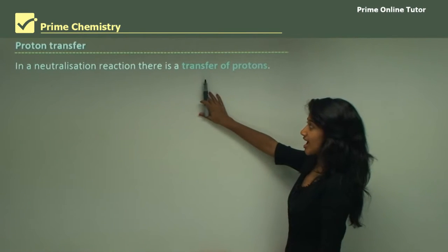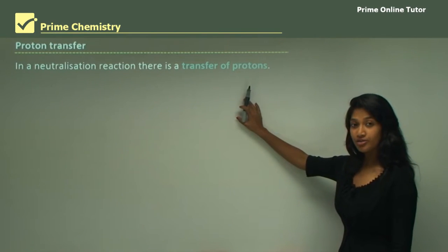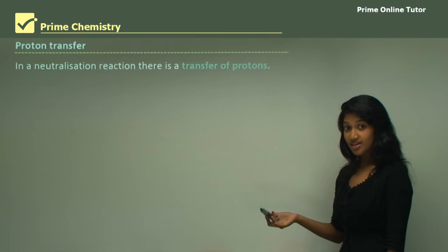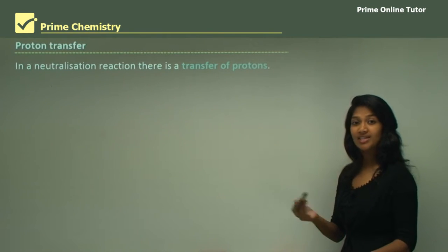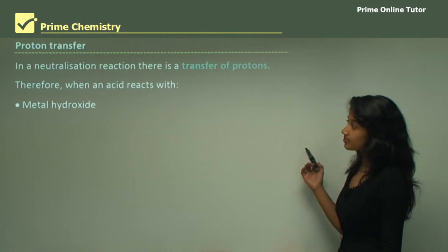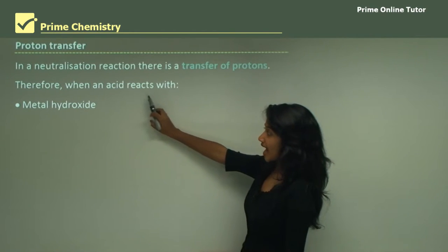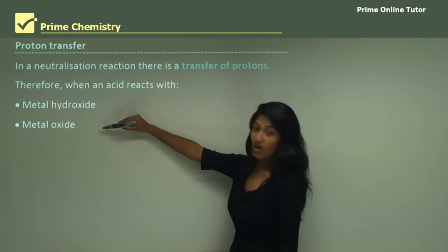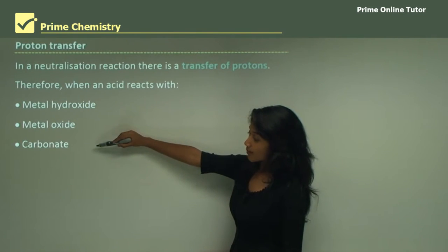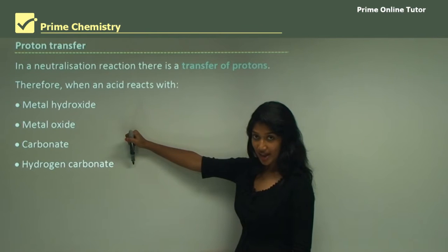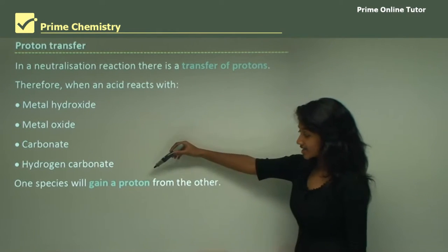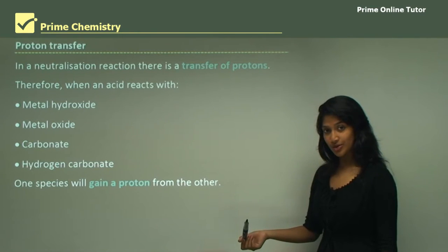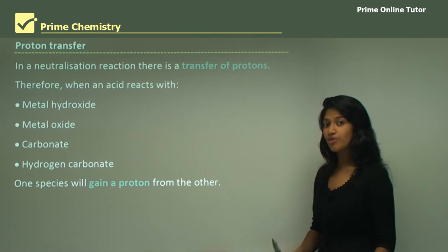In a neutralization reaction there's a transfer of protons. Protons are hydrogen ions, and they're transferred between the acid and the base. Therefore, when an acid reacts with either a metal hydroxide, metal oxide, carbonate, or hydrogen carbonate, one species would gain a proton while the other loses a proton — so there's a transfer of protons.